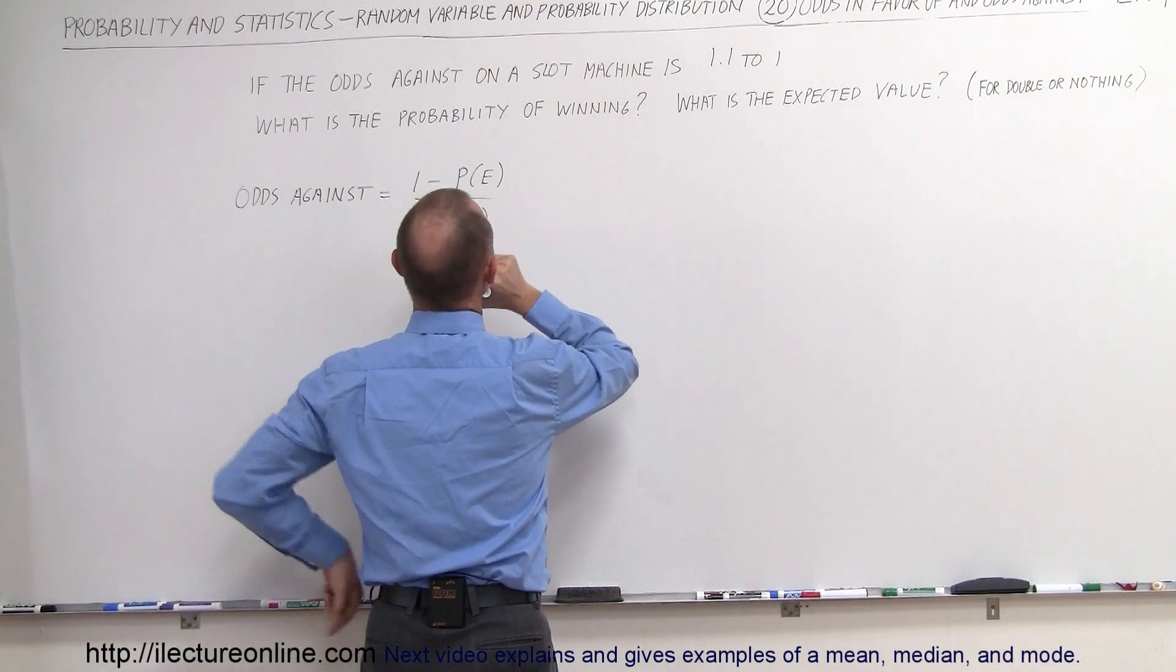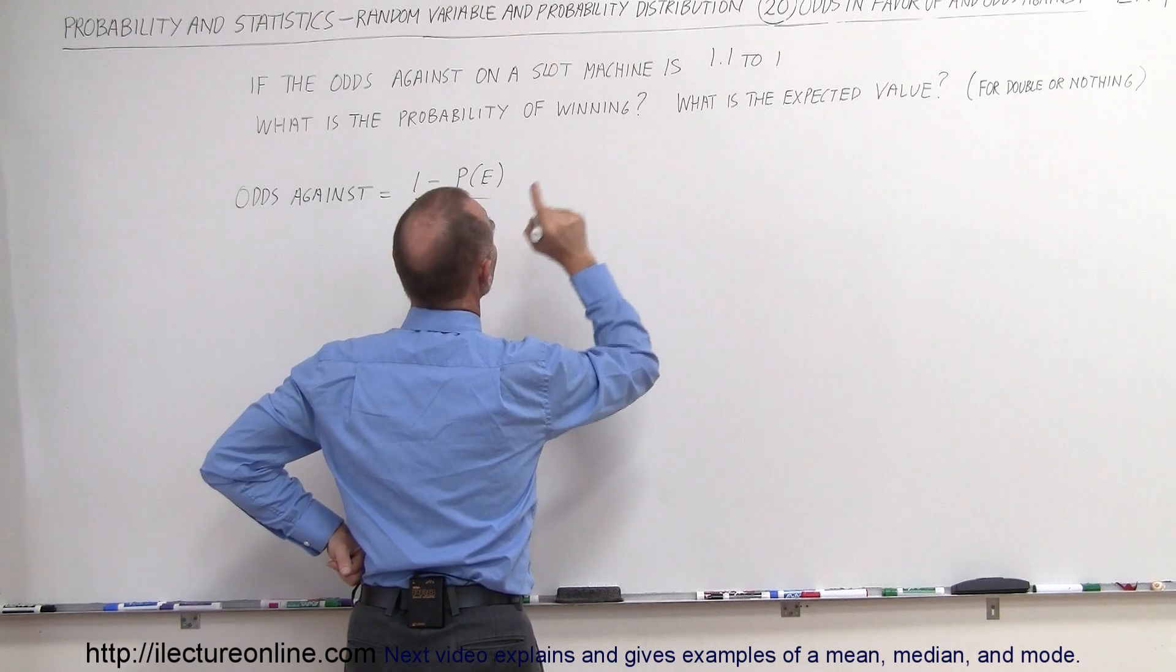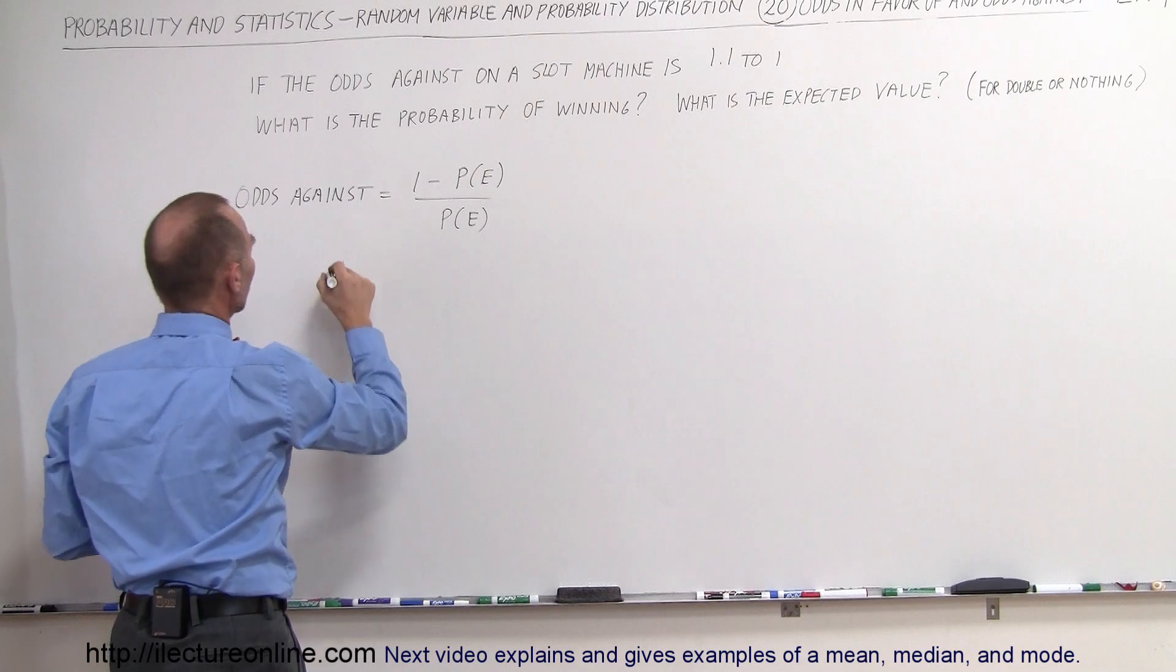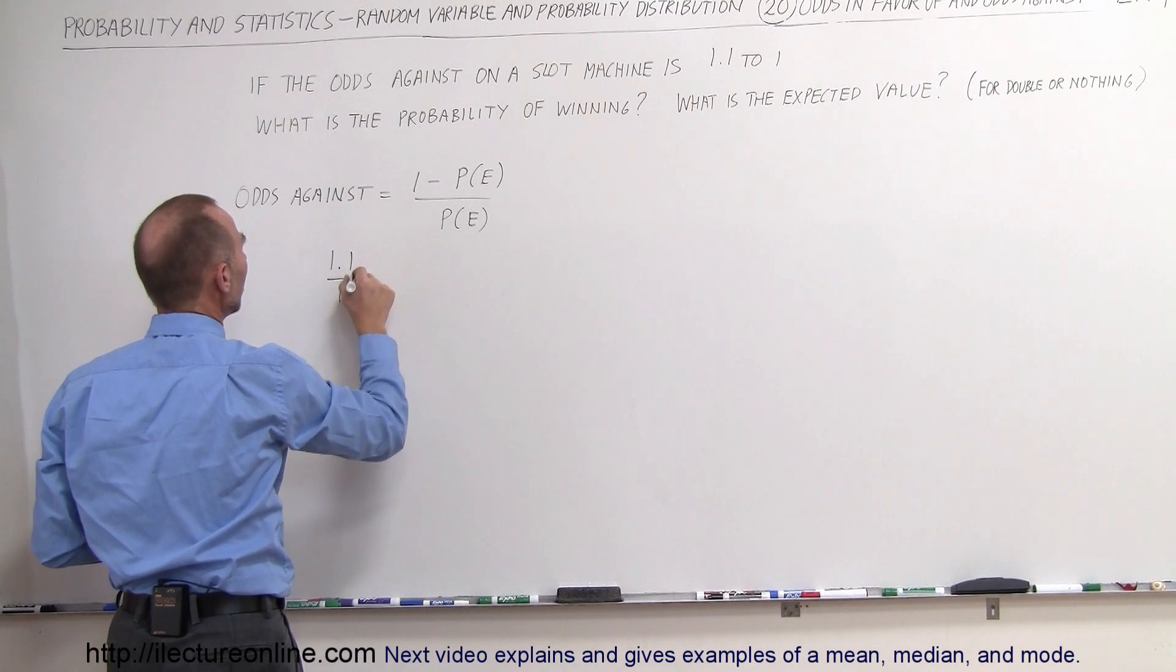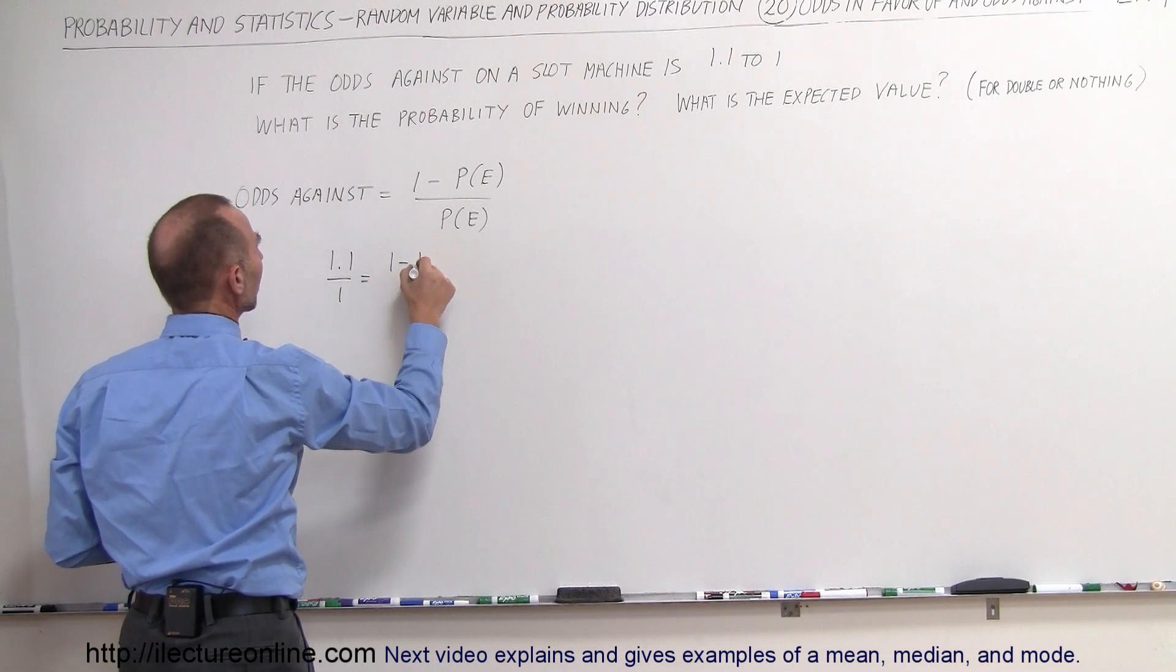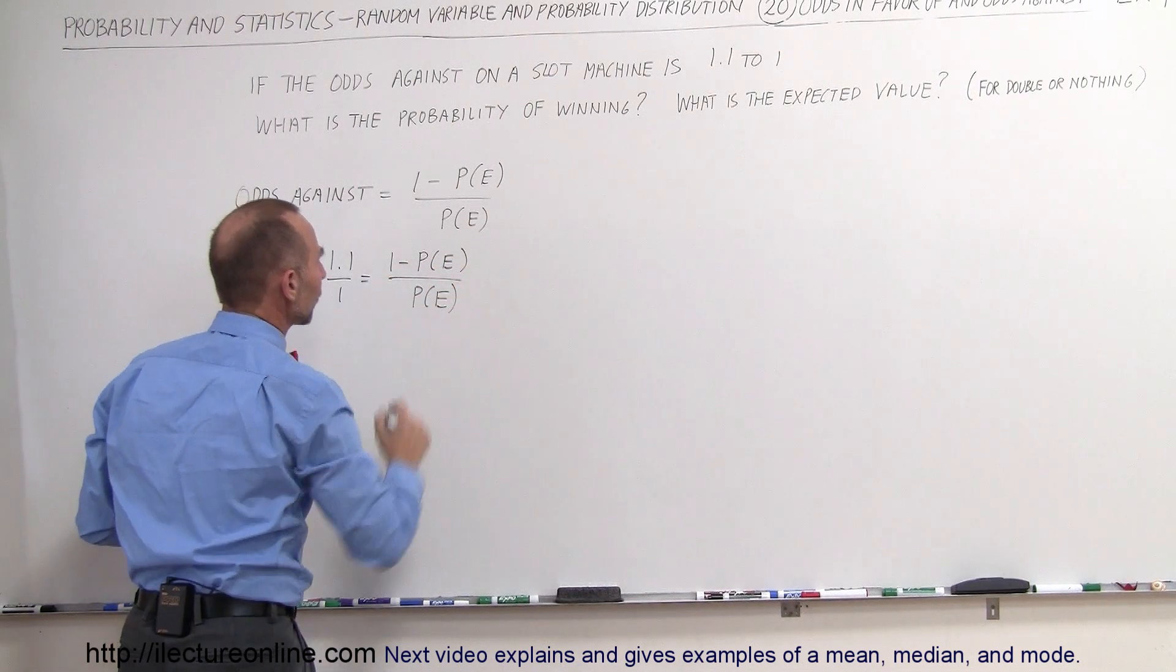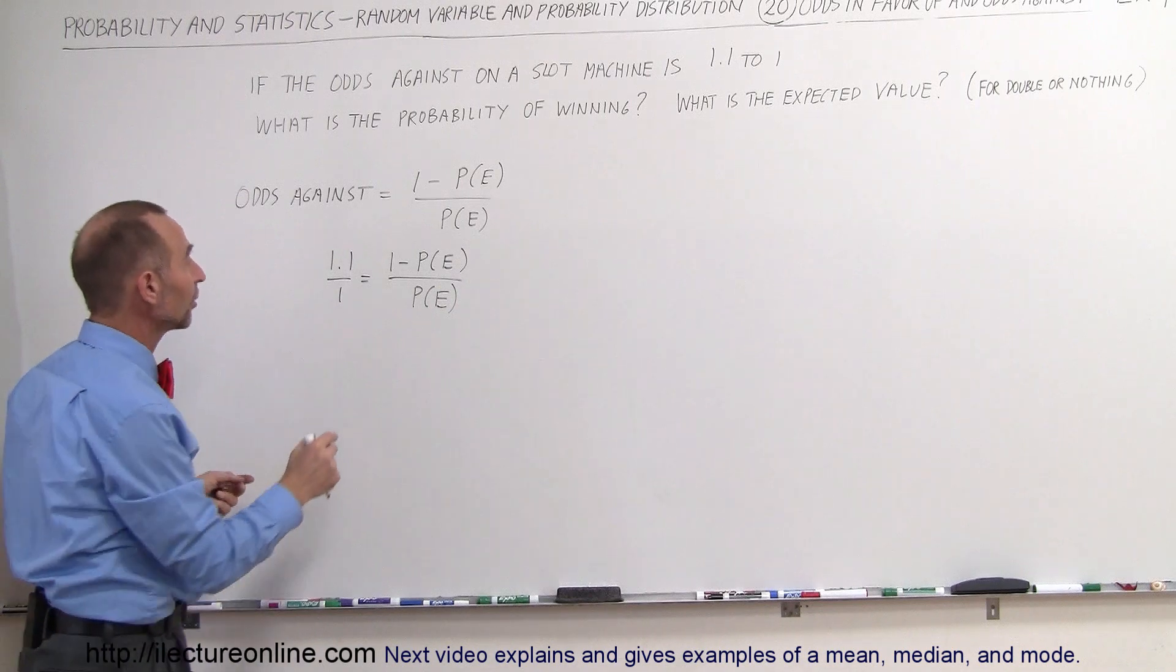So, how do we do that? Well, the odds against is 1.1 to 1. So let's go ahead and plug that in. So we have 1.1 to 1 must therefore equal 1 minus the probability of the event occurring divided by the probability of the event occurring. So now we go ahead and cross multiply.